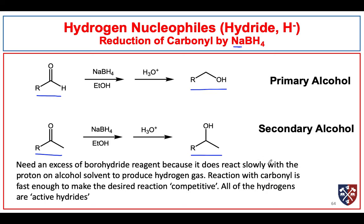The reaction is typically carried out in methanol or ethanol as solvent, followed by water or aqueous acidic workup. The hydride is the source of hydrogen that lands on the carbonyl carbon, and protons are the source of hydrogen that finds itself on the oxygen. We need an excess of borohydride reagent because it does react slowly with the proton on alcohol solvent to produce hydrogen gas. The reaction with carbonyl, however, is fast enough to be competitive with this side reaction. Also keep in mind that all of the hydrogens are active hydrides.